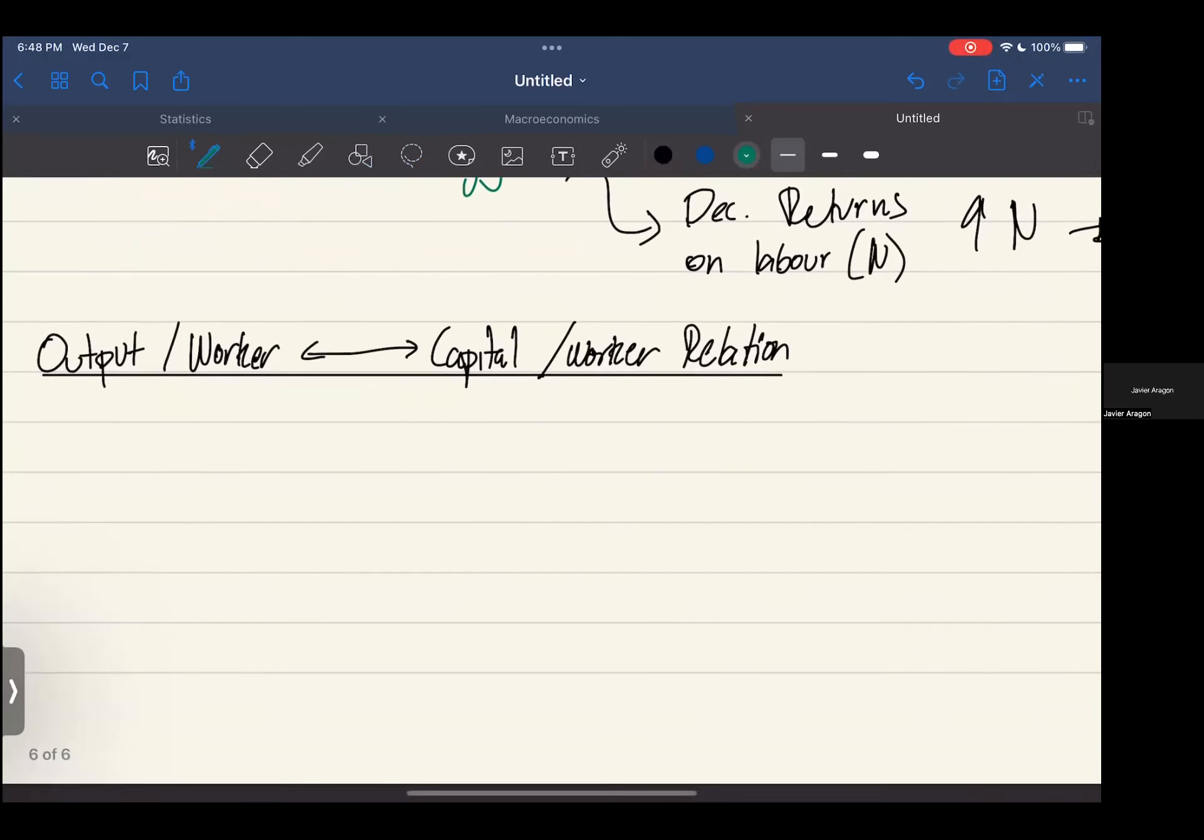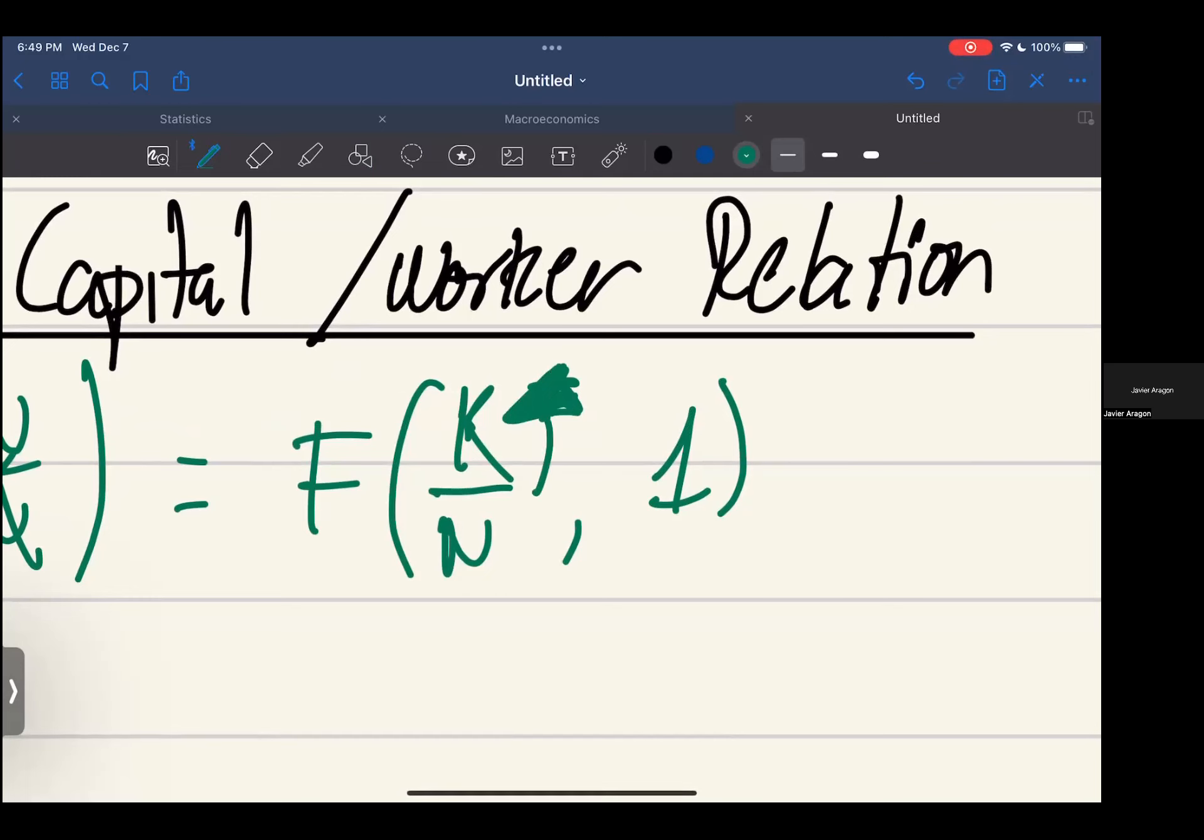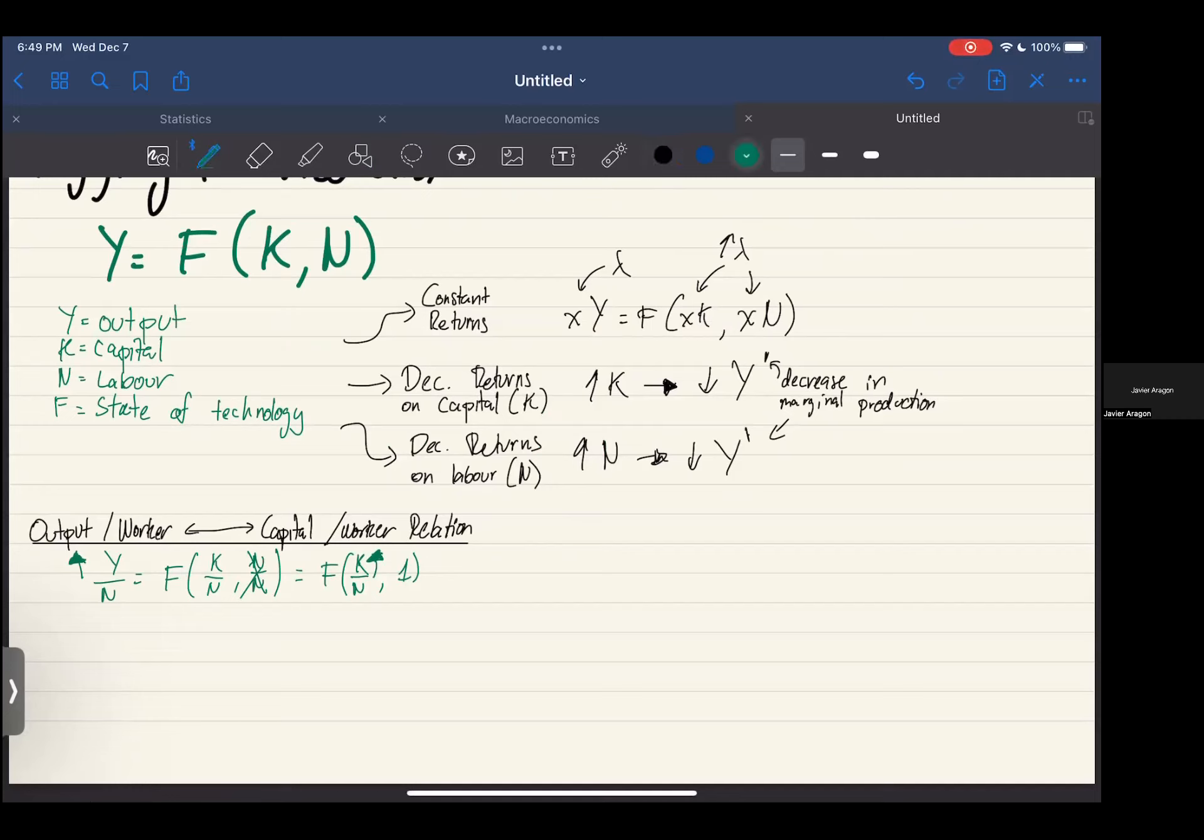This may sound a bit daunting at first but once I put labels on everything on the formula you're going to get it 100%, so don't worry. You have Y over N and you can start thinking about the variables. You have F of K over N and then N over N. This basically cancels out and this is equal to one. So you have that Y over N is equal to F of K over N times one. As you can see, you have Y over N and what does Y mean? Output. What does N mean? Worker. So this little thing is your output per worker, and then the other one is capital per worker. Capital is equal to K, then per worker, so you have this right here, that is your K over N.